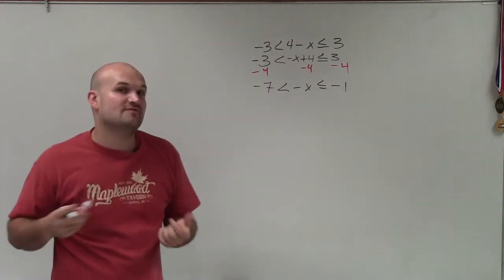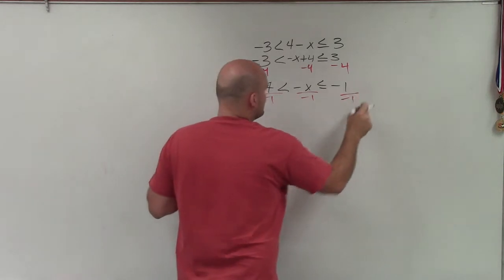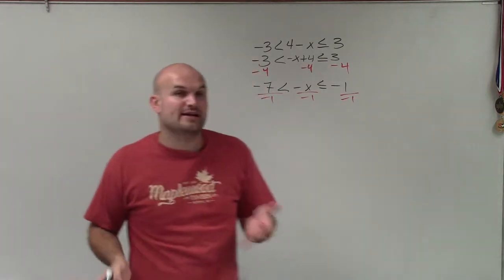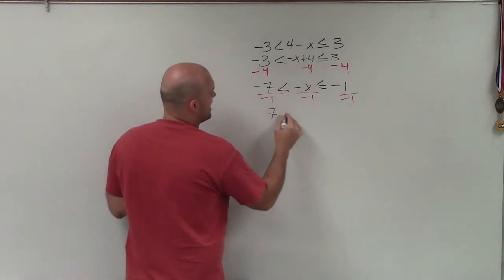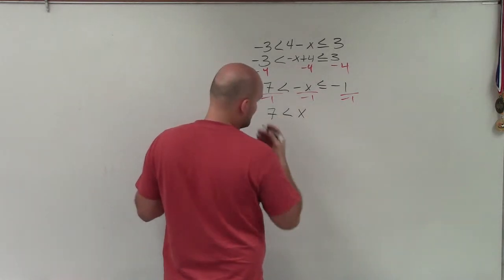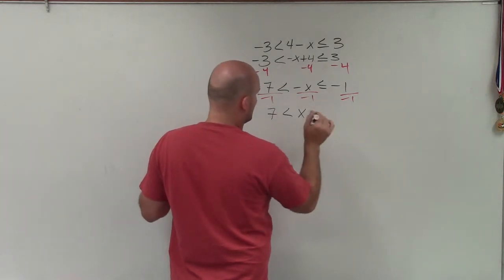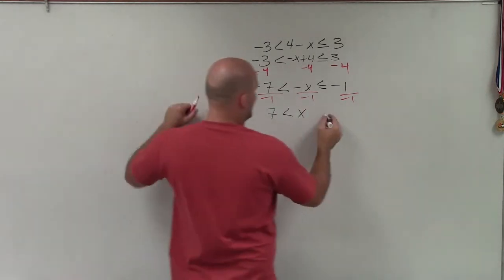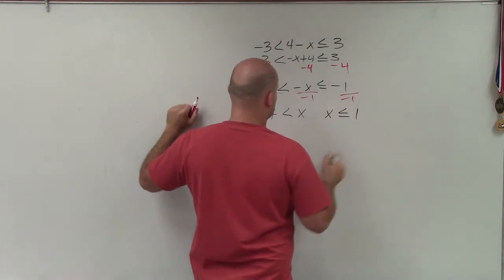Now we need to undo multiply by -1. So I'll divide by -1. And just like when we solve for inequality and we have to multiply divide by negative number, we have to switch the sign. So now it's positive 7 is less than x and x is less than or equal to positive 1.